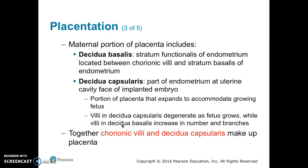The maternal portion of the placenta includes the decidua basalis and the decidua capsularis. The decidua basalis is the stratum functionalis of the endometrium located between the chorionic villi and the stratum basalis of the endometrium. The decidua capsularis is the part of the endometrium at the uterine cavity face of the implanted embryo. This portion expands to accommodate the growing fetus. The villi in the decidua capsularis degenerate as the fetus grows, while the villi in the decidua basalis increase in number and branches. Together the chorionic villi and the decidua basalis make up the placenta.